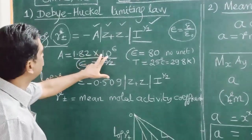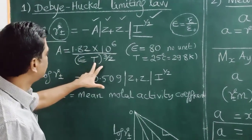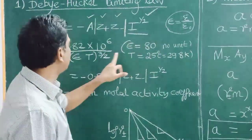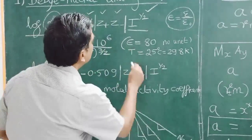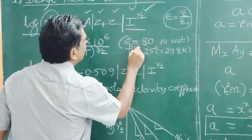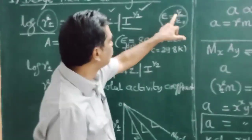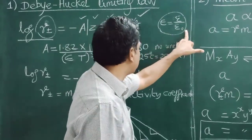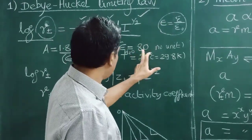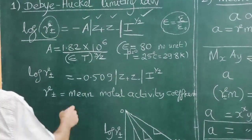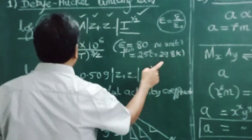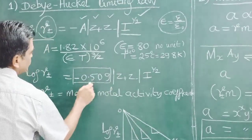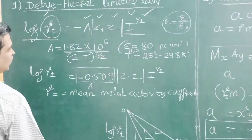A equals 1.82 × 10⁶ divided by (ε × T)^(3/2), where ε is the dielectric constant of the medium. The dielectric constant is the permittivity of the substance divided by the permittivity of free space, so it has no unit. For water at 25°C (298 K), substituting gives the A value for water.